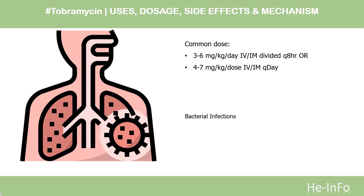For ophthalmic ointment: mild to moderate infections — adults and children apply every 8 to 12 hours; severe infections — every 3 to 4 hours until improvement occurs. For ophthalmic solution (eye drops): mild to moderate infections — 1 drop every 4 hours; severe infections — 1 drop every hour until improvement occurs.